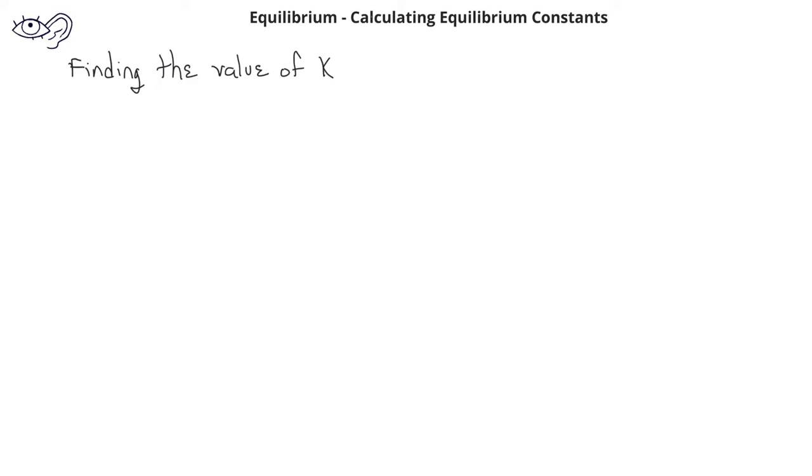In previous videos, we've learned how to write the equilibrium constant expression, which is a way to determine the value of the equilibrium constant. Now let's look at an example of how to actually find the value of the equilibrium constant. To begin with, we need to know the equilibrium concentrations of the products and the reactants.